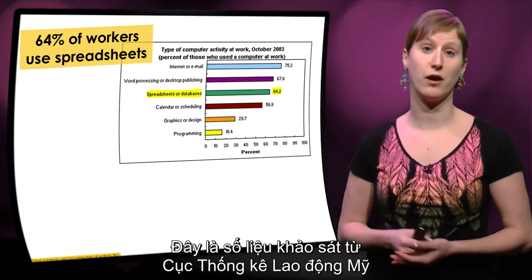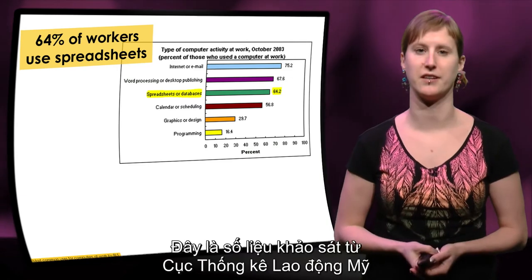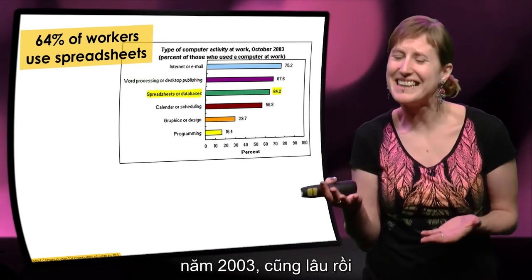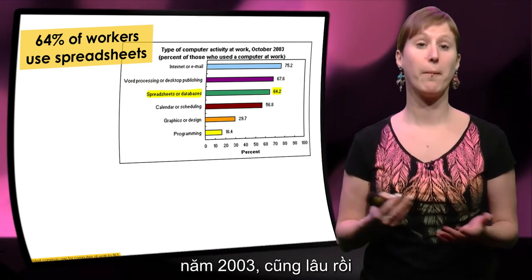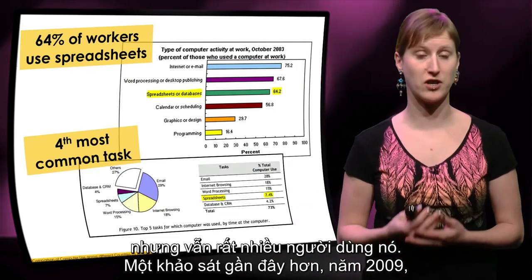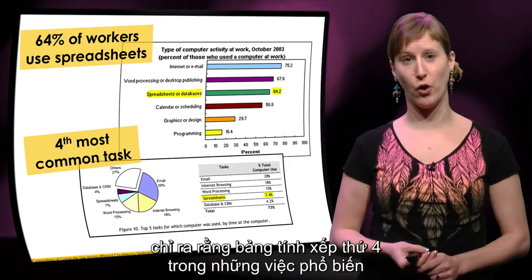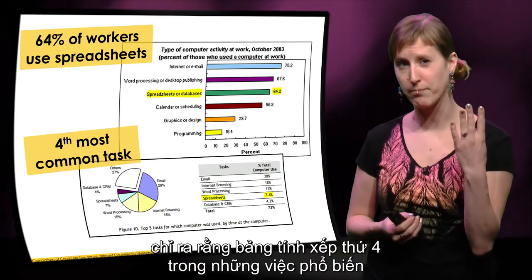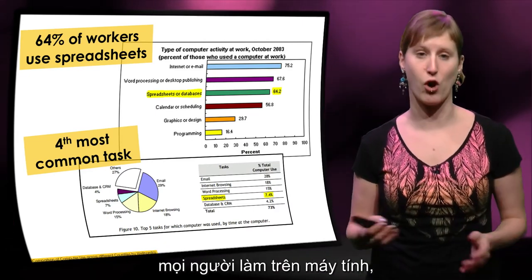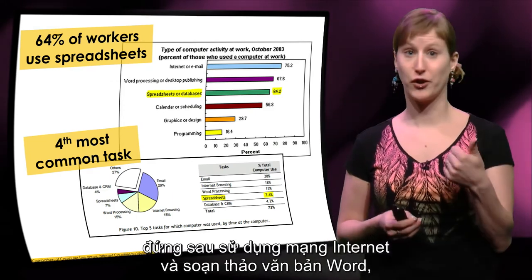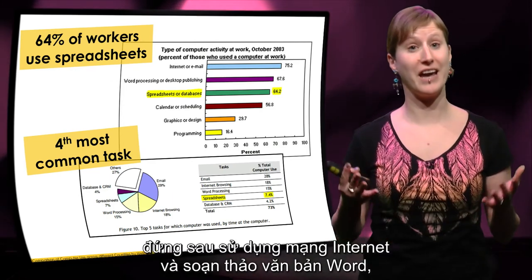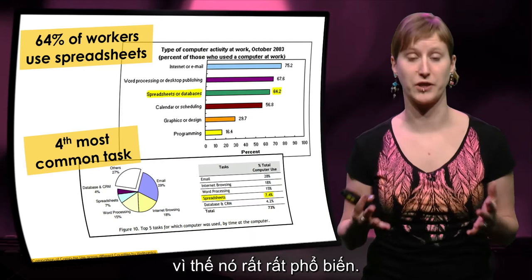This is from a US labor statistics survey from 2003, so it's a little bit old, but it still represents a lot of people. A more recent survey from 2009 showed that spreadsheets are the fourth most common task that people do at their job on the computer, after using the internet and word processing. So it's really, really common.